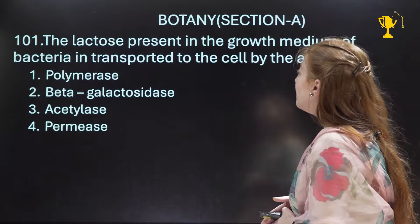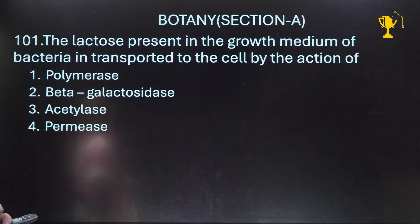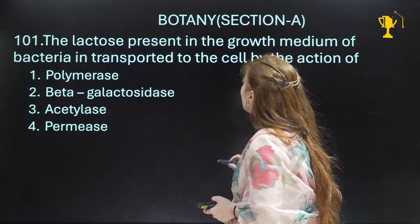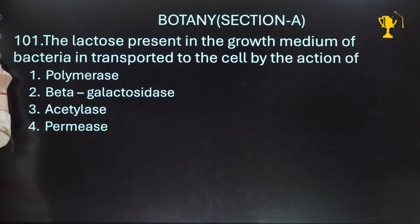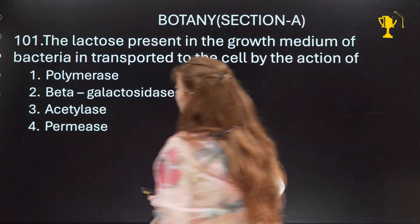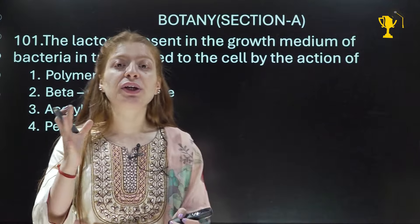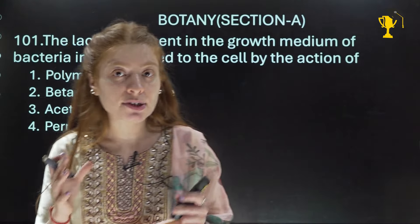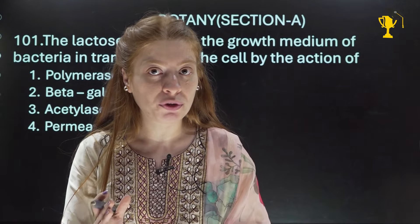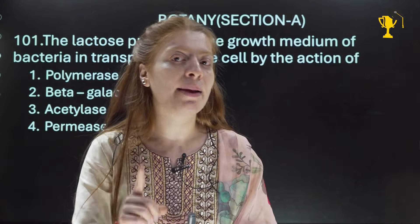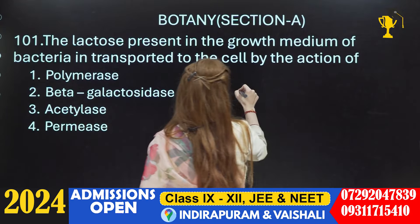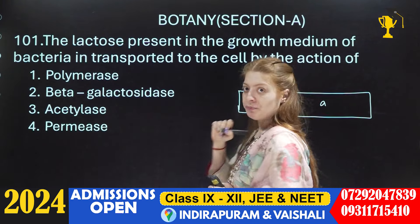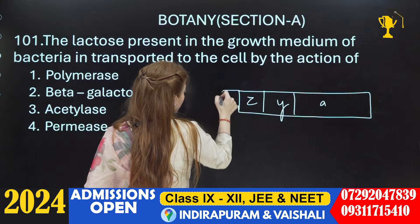Question 101 is from Chapter — Molecular Basis of Inheritance. Very easy question. It is from lac operon. The question is: 'The lactose present in the growth medium of the bacteria is transported to the cell by the action of?' Basically, lac operon is present in E. coli to utilize or metabolize the sugar lactose. The operon has three structural genes. An operon is a cluster of structural genes under the control of a single promoter, so all genes are transcribed as a single mRNA. In lac operon we have z, y, and a genes.